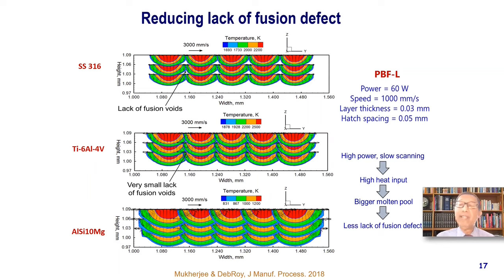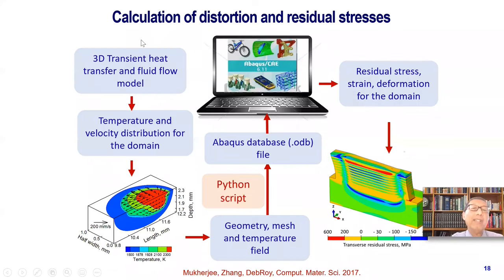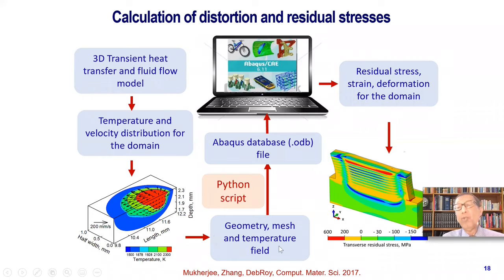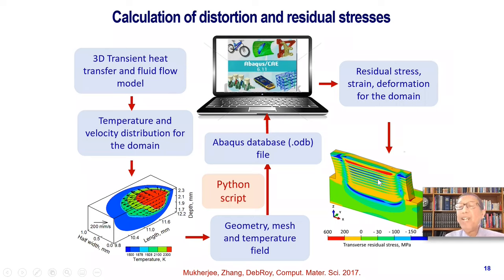We can also look at residual stresses. A 3D transient heat transfer and fluid flow model can give us temperature and velocity fields for the entire domain, not just the fusion zone. Those transient values together with the mesh and temperature fields can be fed to a thermomechanical model like Abaqus to calculate residual stress, strain, and deformation of the entire domain — so we can know if the part is going to be bent out of shape or if the geometrical specifications will be met.